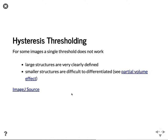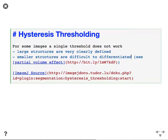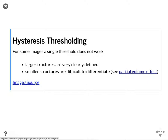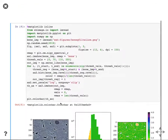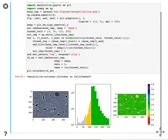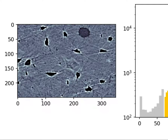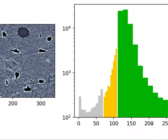Another technique, going back to the canaliculi, is this idea of hysteresis thresholding. This is where you have images where large structures are very clearly defined and smaller structures are difficult to differentiate — this is the partial volume effect. There's a hysteresis threshold plugin for ImageJ where it's directly implemented, but it's a fairly straightforward technique to implement yourself. Here we have the bone sample image where we can zoom in and see the intensity values with the histogram on a log scale, which makes it a lot easier to see where the different groups are.